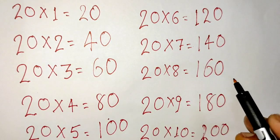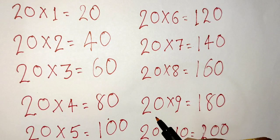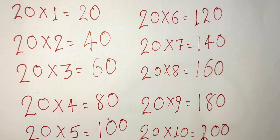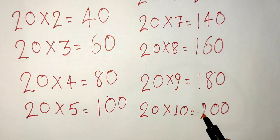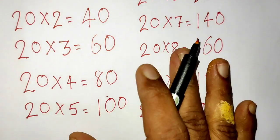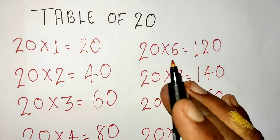20x8=160, 20x9=180, and last 20x10=200. Note, if you want to practice math as much as possible, then go to the description and buy any books for practice of math more and more.